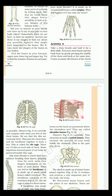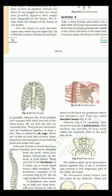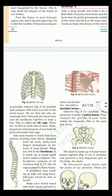And next is rib cage. Observe this picture carefully and compare with what you feel of the chest bones. We see that the ribs are curiously bent. They join the chest bone and the backbone together to form a box. This is called rib cage. There are 12 ribs on each side of the chest. Some important internal parts of our body lie protected inside the cage. So, this works as a cage, right? Thus the name came rib cage. Because it protects the important internal parts like lungs, heart. 12 ribs on each side of the chest, it protects as a cage.